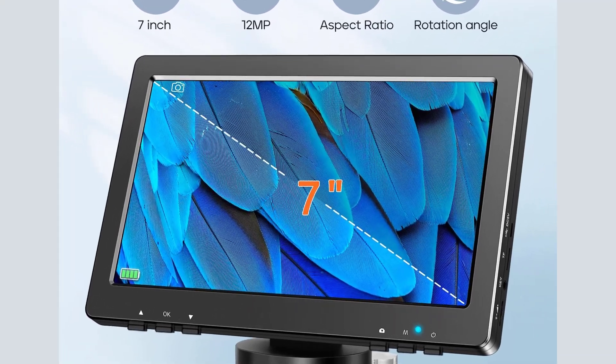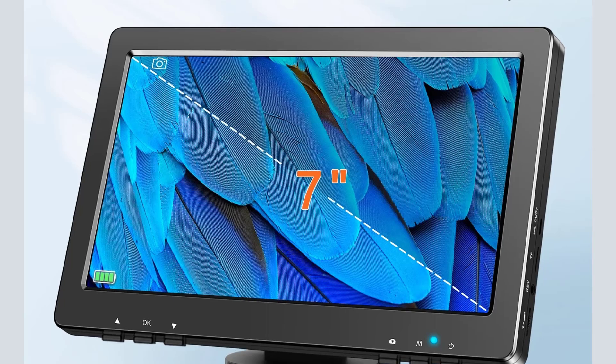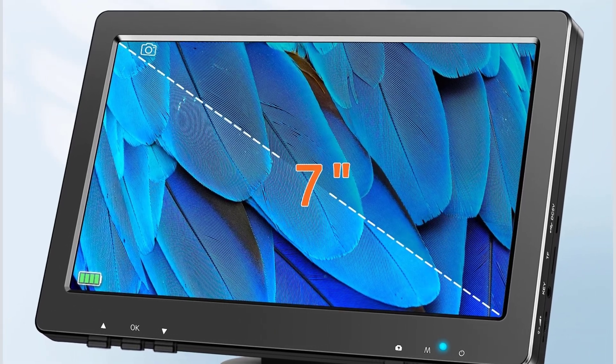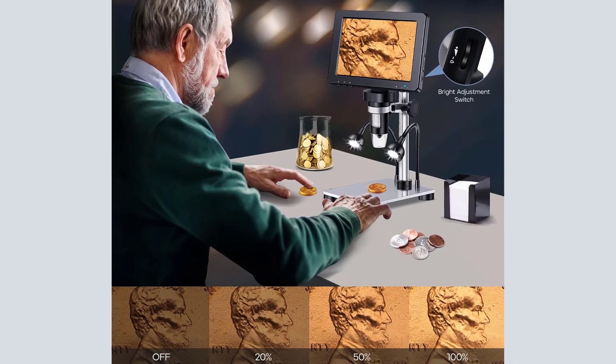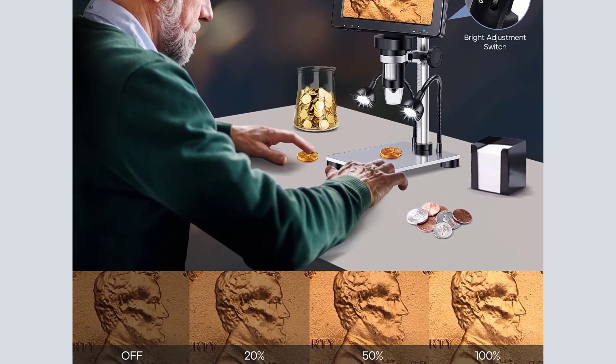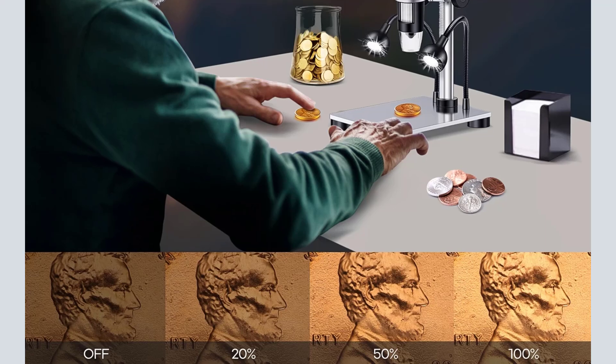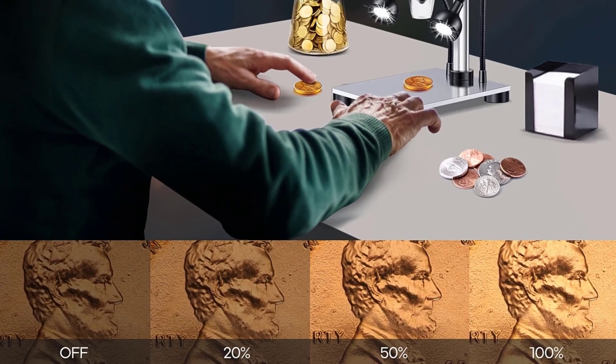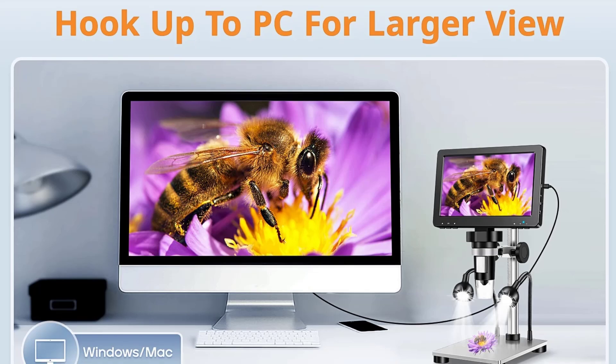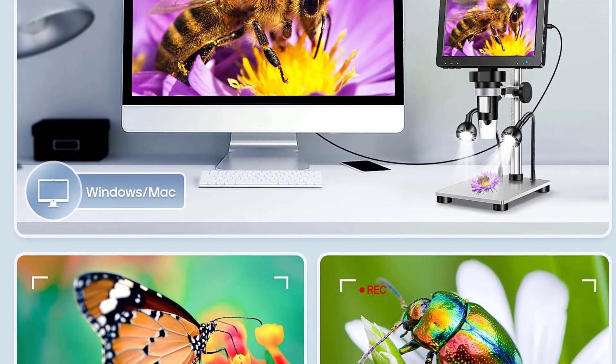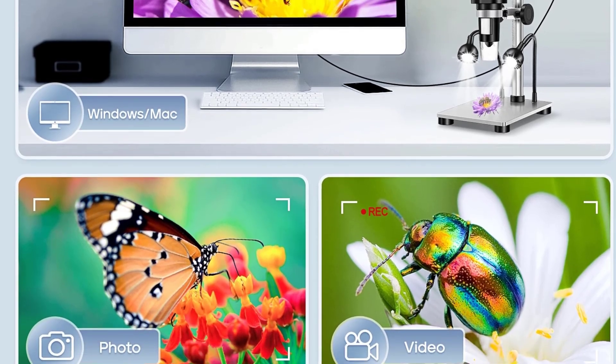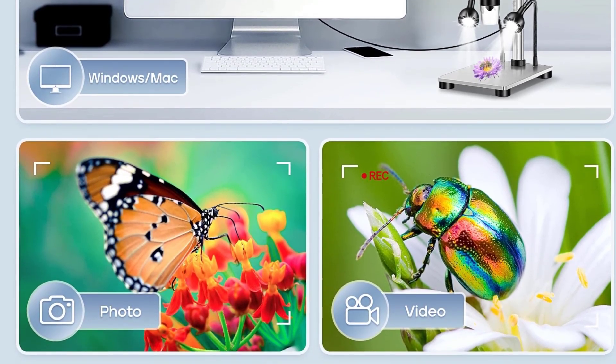Video Maximum Pixel: 1080 FHD. Lens Optic Size: 1 quarter. Picture Resolution: 12M, 10M, 8M, 5M, 3M. Video Resolution: 1080 FHD, 1080p, 720p. Video Format: AVI. Focus Mode: Manual. Picture Format: JPG.